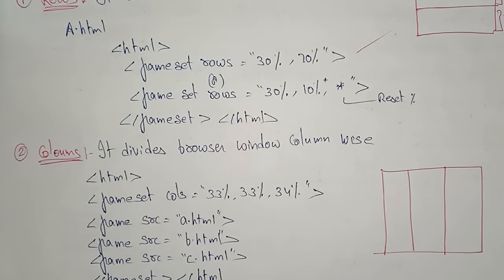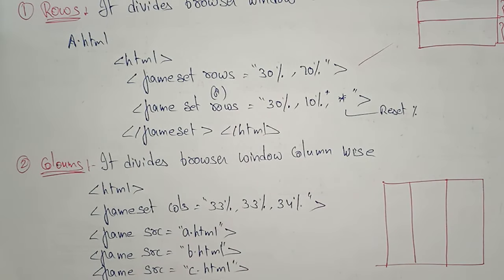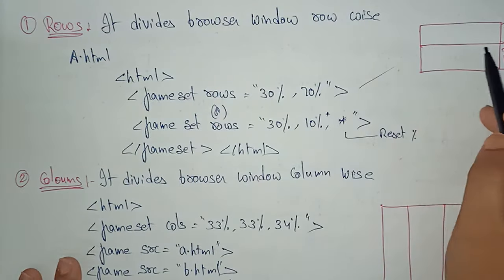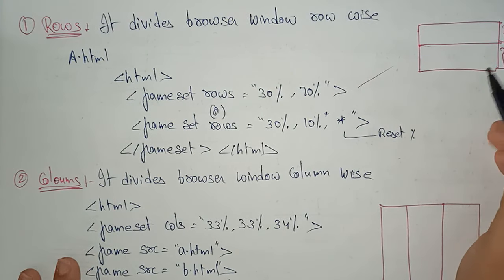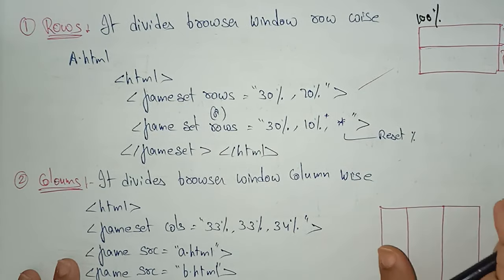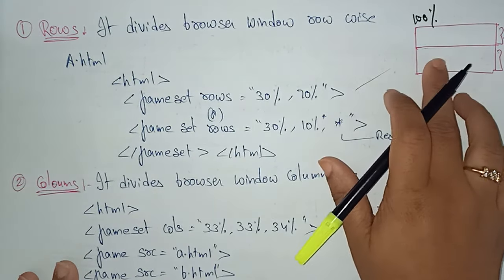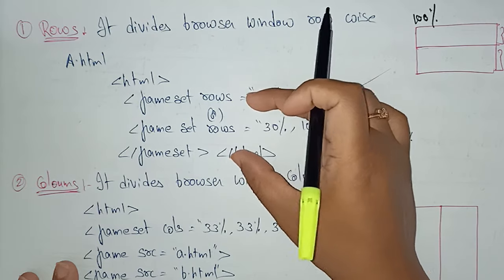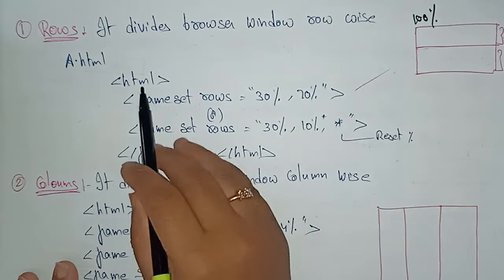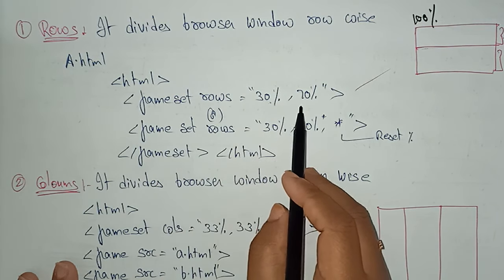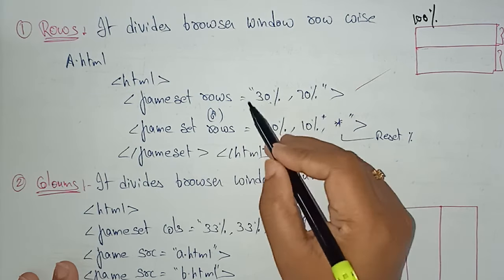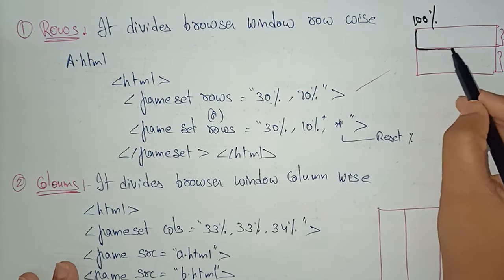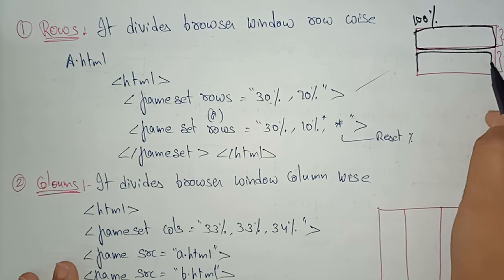First, rows. If I want to divide my web browser into rows, I use the rows attribute. The web page is 100% total. I'm dividing it into two parts — for example, rows equal to 30%, 70%. That means 30 plus 70 equals 100%. So the browser is divided into one frame at 30% and another at 70%.